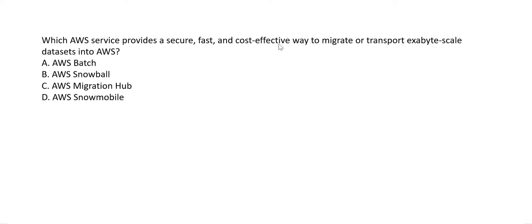Which AWS service provides a secure, fast, and cost-effective way to migrate or transport exabyte-scale datasets into AWS? The keyword is 'exabyte scale.' Among the options, only Snowmobile fits — it is used for extremely large amounts of data transfer at the exabyte scale.